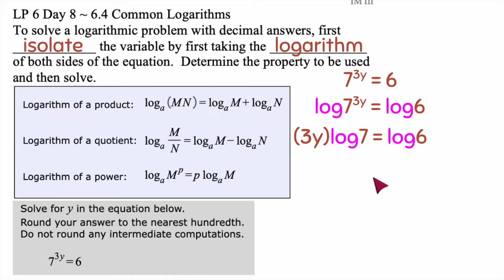It said variable up here but really should have said logs. So I'm dividing by log of 7 on both sides. I didn't show you that, but I took the log of 7 from the left and divided it on left and right. So I have log of 6 over log of 7, and then 3y is left on the left side there.